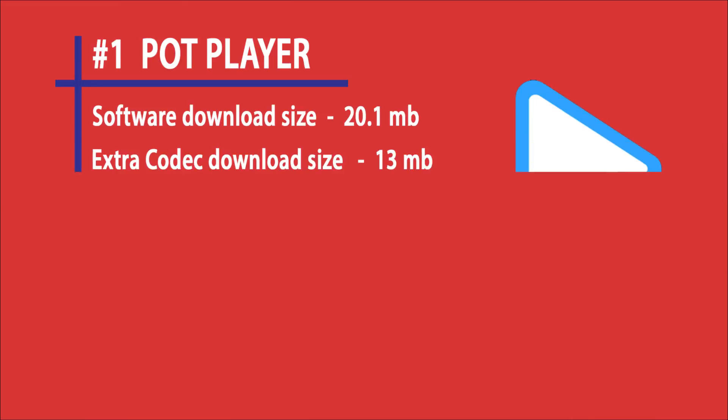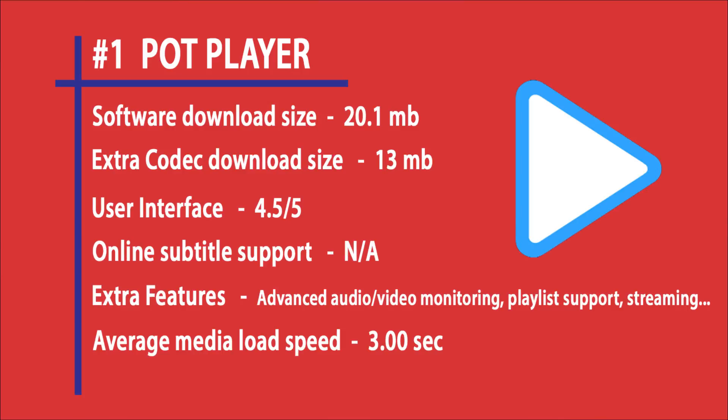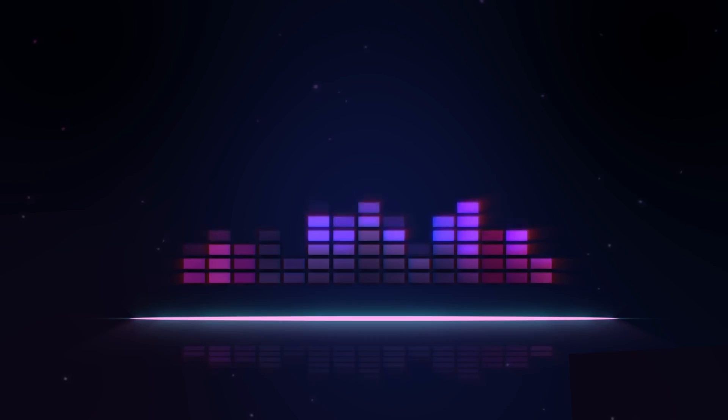Our number one media player — the top contender — is Pot Player. It's the best in the market with great community features. Software size is around 26 MB with an extra 13 MB codec download. User interface is very good — I'll give it 4.5 out of 5. No online subtitle support. Main features include playlist and transparency panel, streaming, advanced audio and video settings, and 4K support. Average media load speed is 3 seconds.